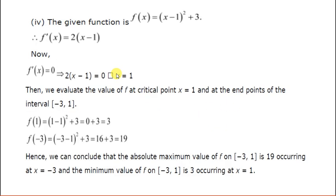Second part: the given function is f(x) = (x - 1)² + 3. Differentiate to get 2(x - 1). Put it equal to 0 to get the critical points. From here you get x = 1. So the critical point is 1, and the endpoints given are -3 and 1. At these three points, we find the function's value. At x = 1, the function value is 3. At x = -3, the value is 19.